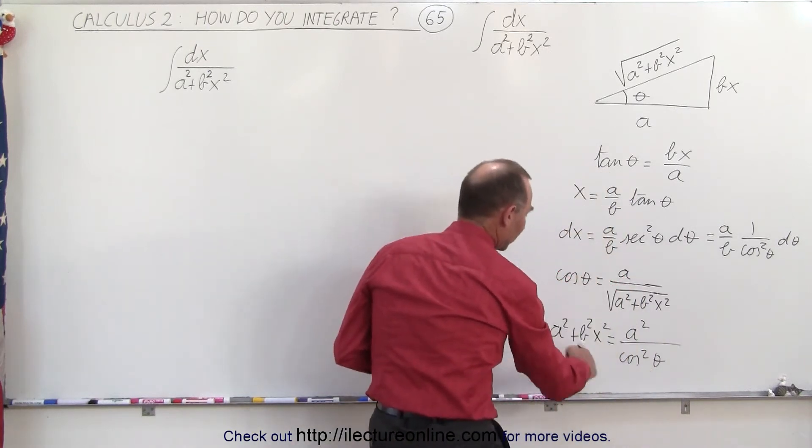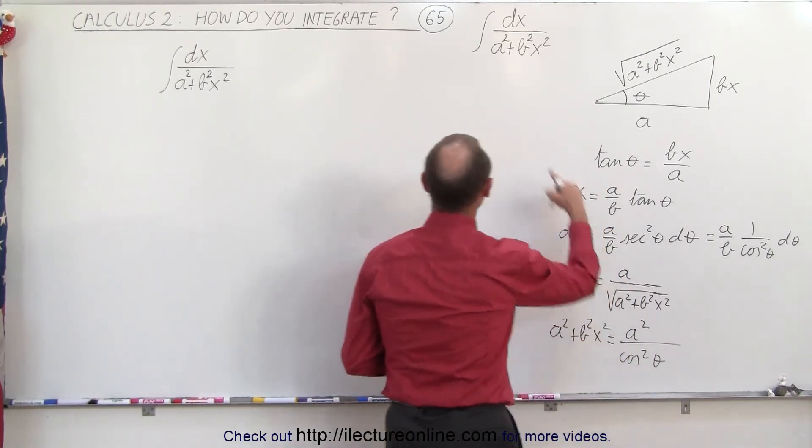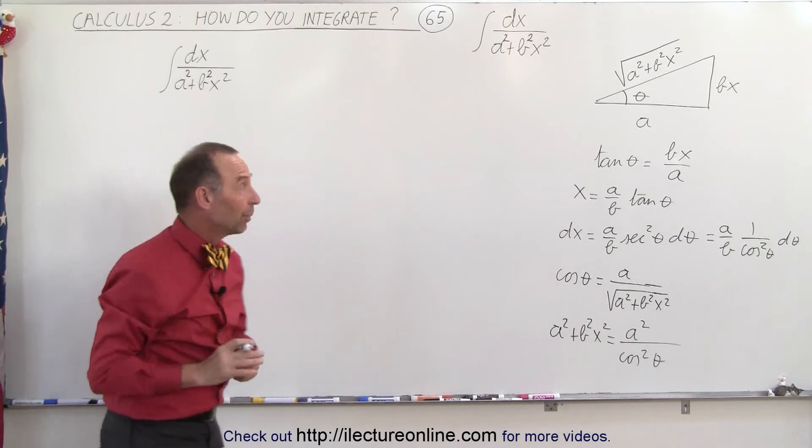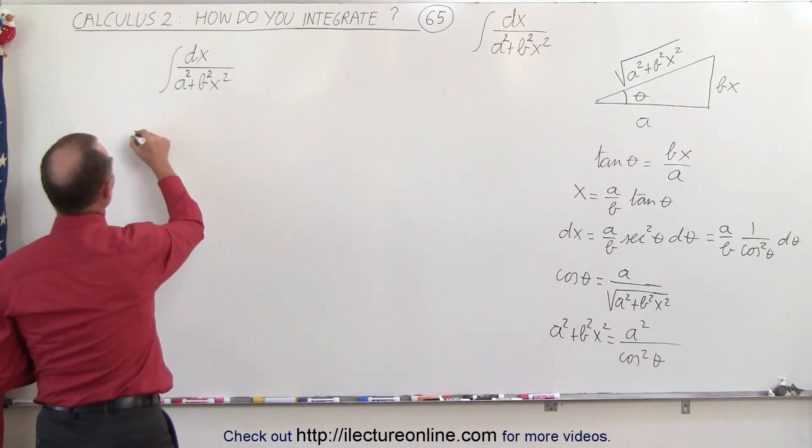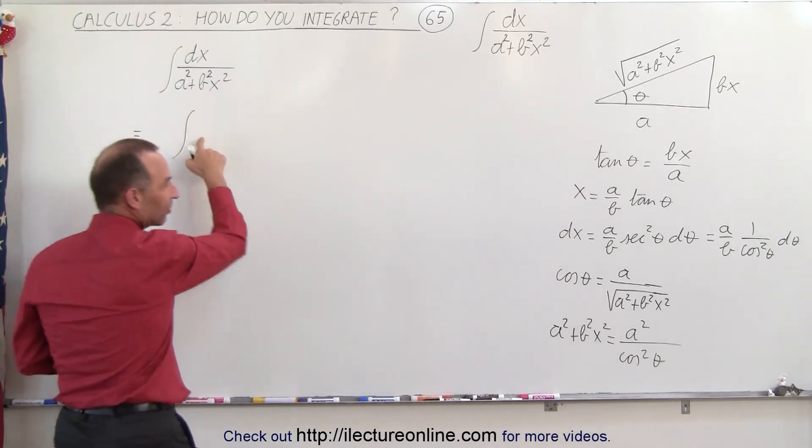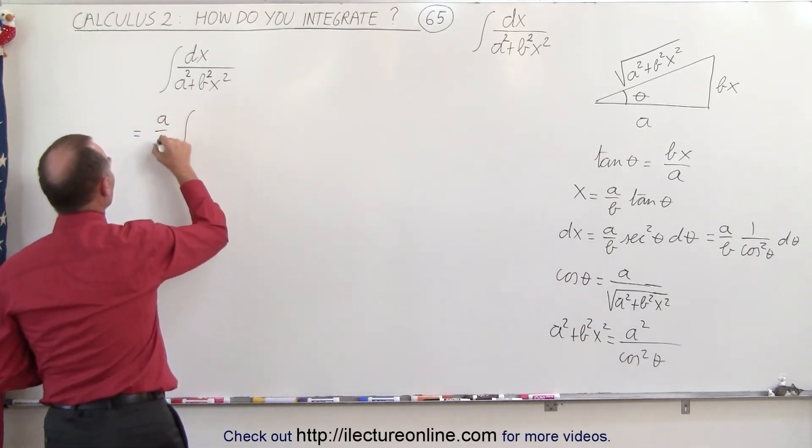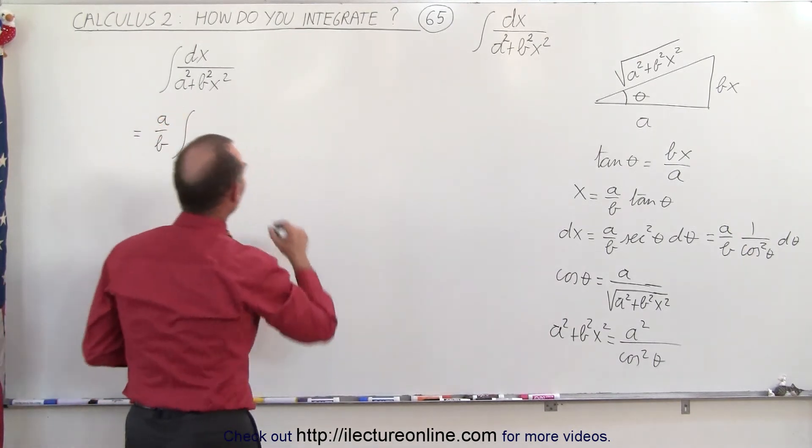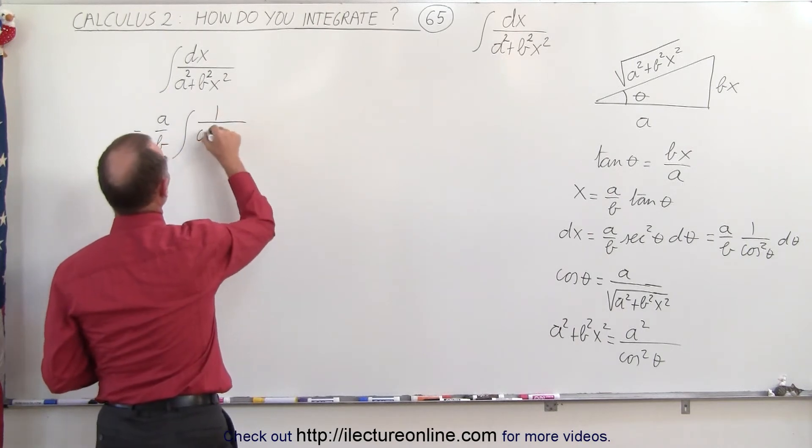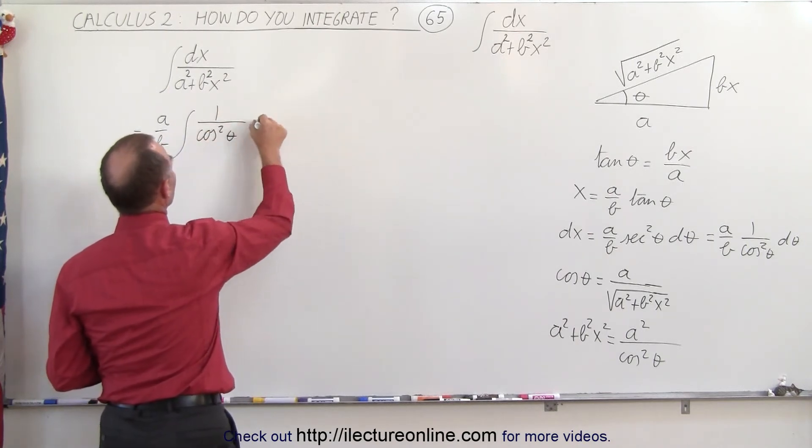And so we can substitute this into our integral to see what we end up with. So this becomes equal to the integral of DX, and DX is A over B, which I can pull outside the integral sign, A over B times 1 over the cosine square of theta d theta,